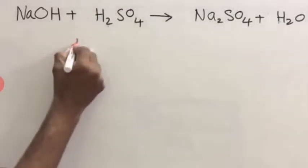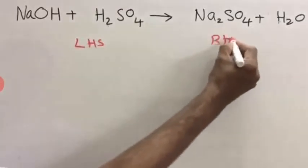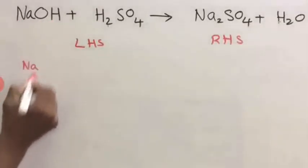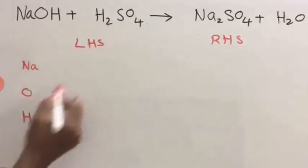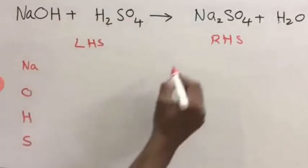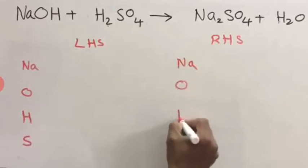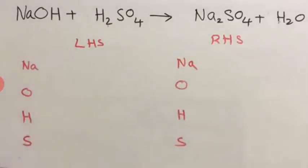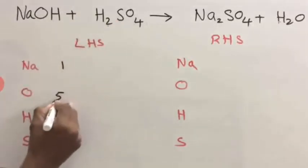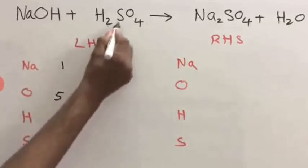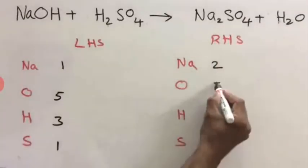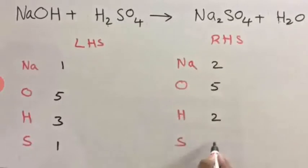Let us balance one more equation. Write LHS and RHS. On LHS you have sodium, oxygen, hydrogen, and sulfur. The same elements are present on the right hand side: Na, O, H, and S. Now number of atoms: sodium 1, oxygen 1 here and 4 here — total 5, hydrogen 1 here and 2 here — total 3, sulfur 1. On RHS: sodium 2, oxygen 4 here and 1 here — 5, hydrogen 2, sulfur 1.